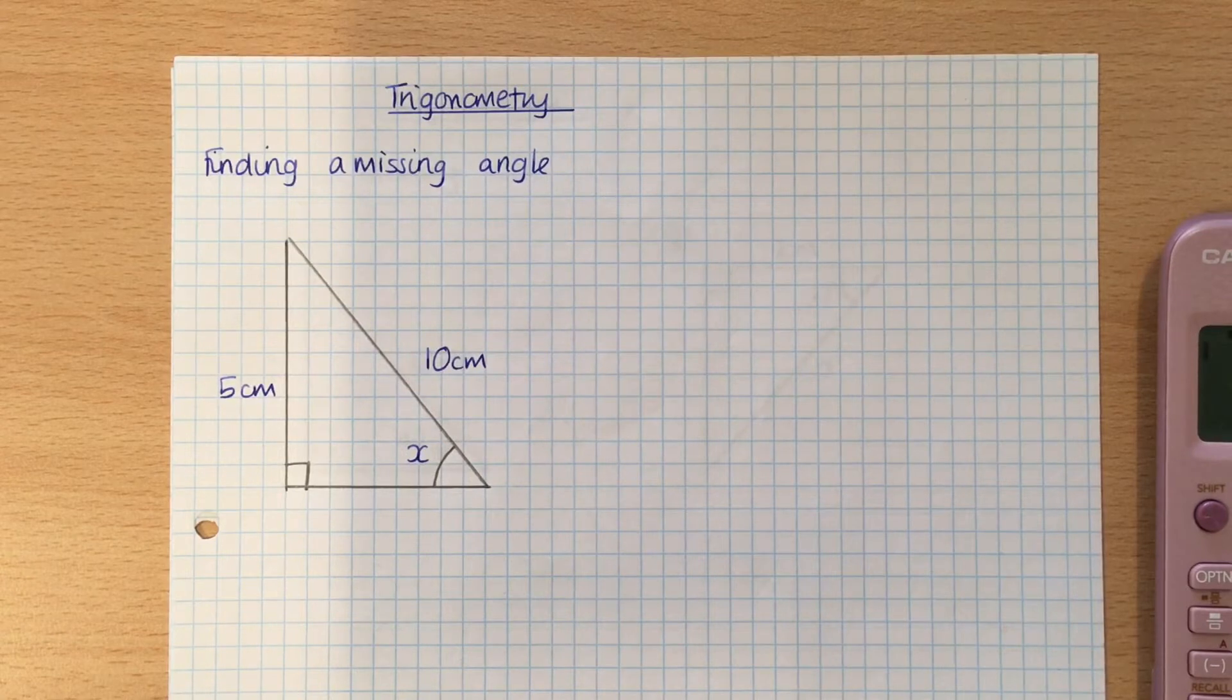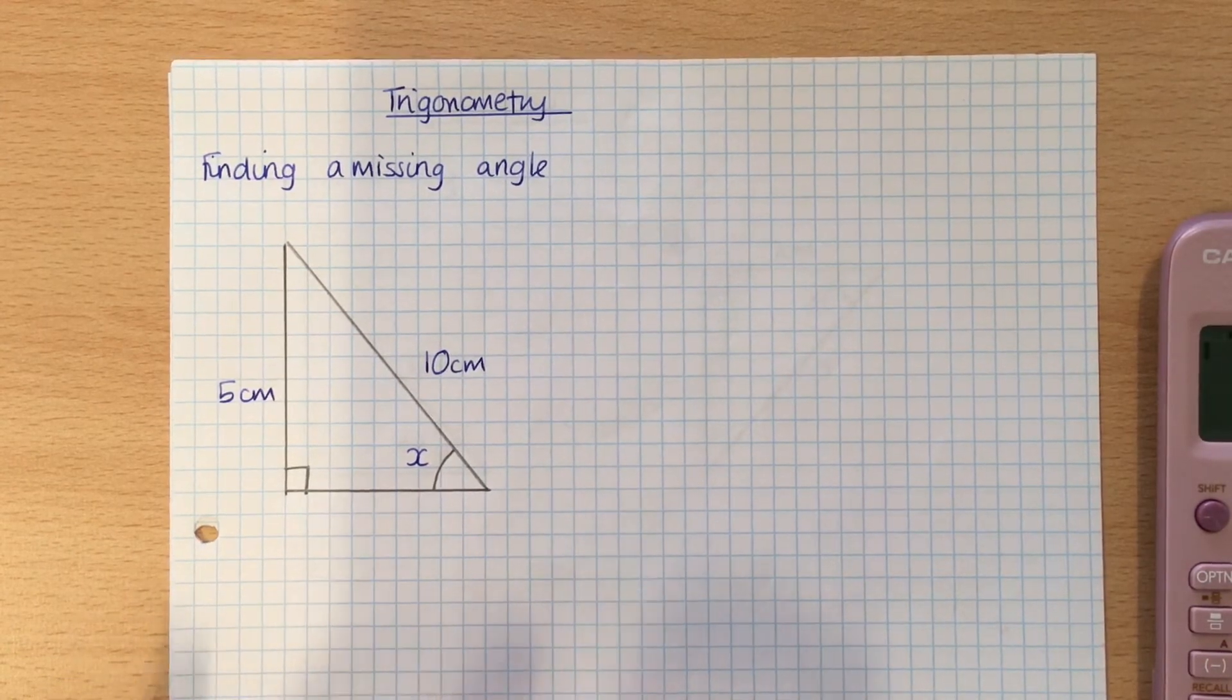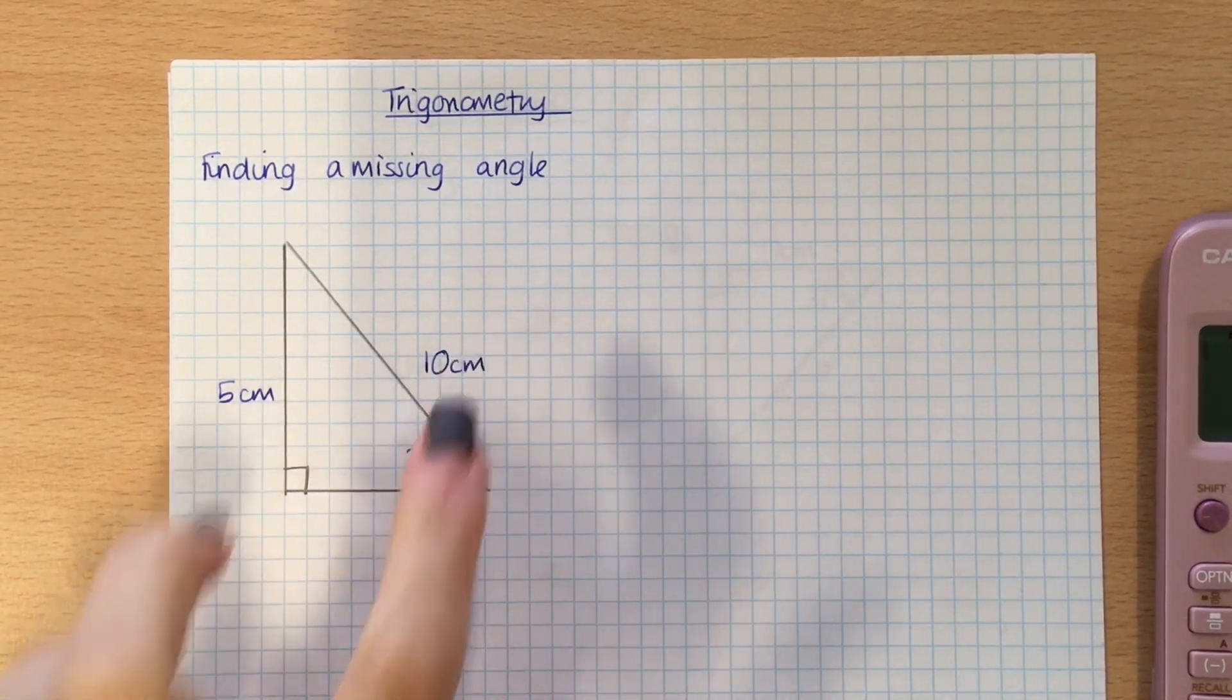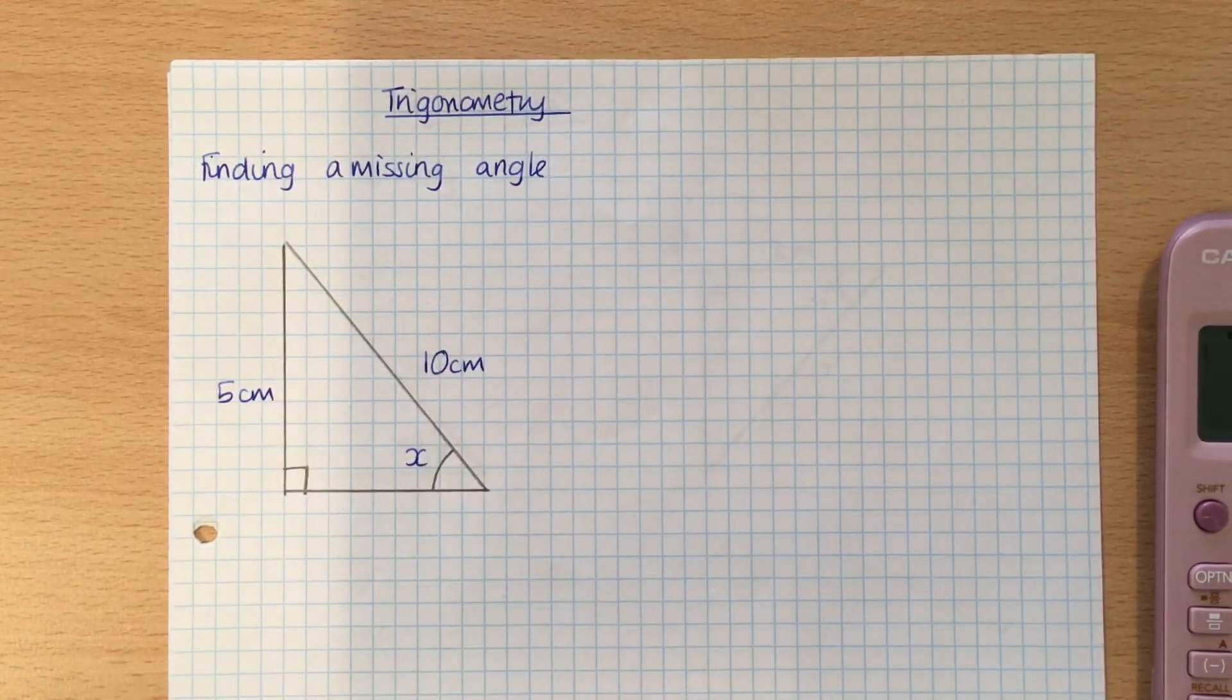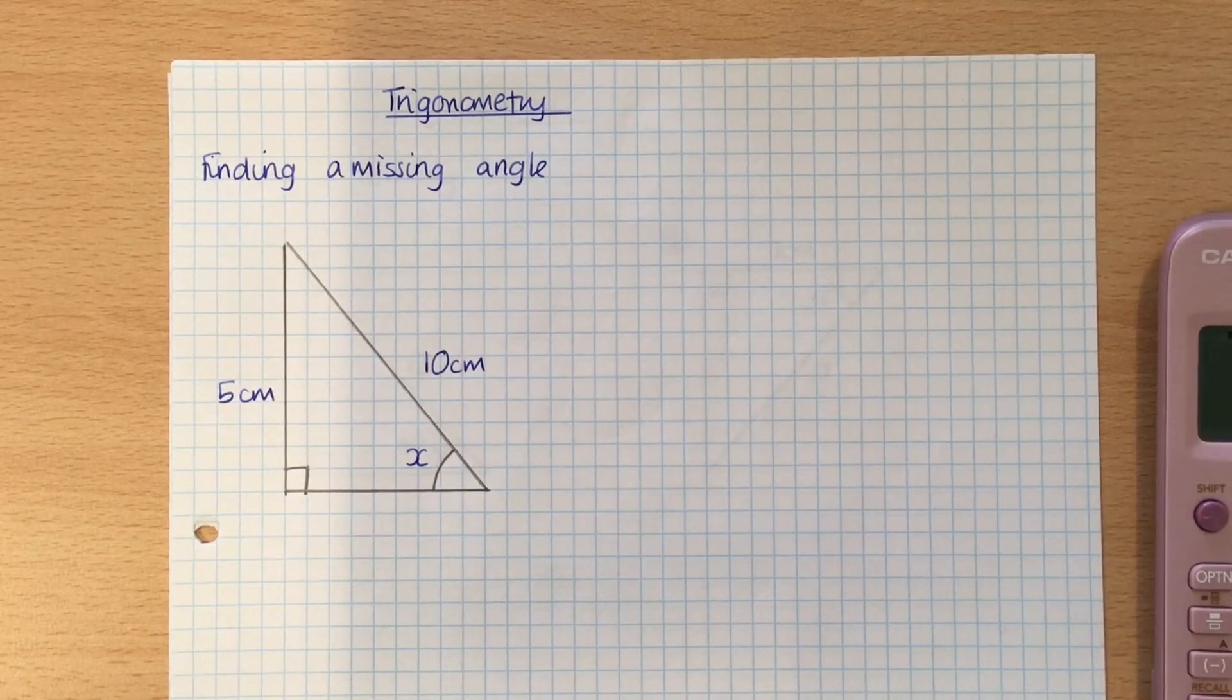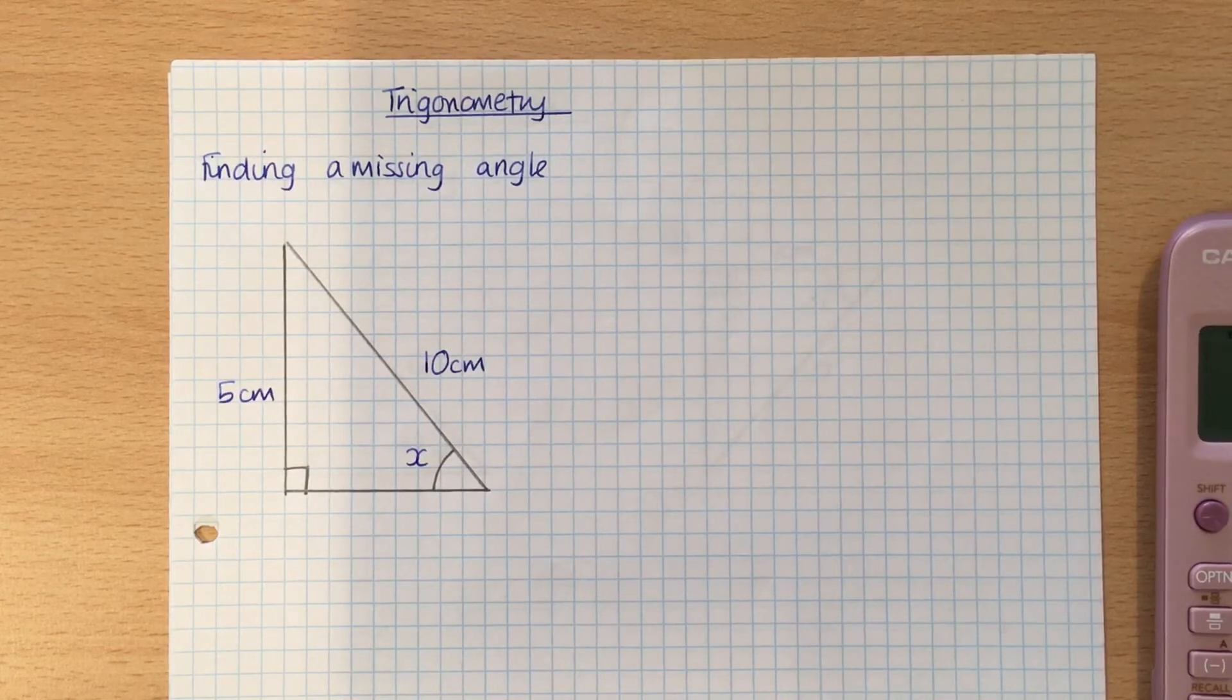So I'm going to go through a worked example this time, and then you will need to practice. So what we've got here is our right angle triangle, I'm told two sides, and I've got a missing angle. So that screams trigonometry, because as I said in my first video, trigonometry always involves two sides and one angle.